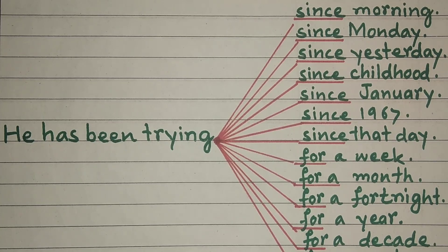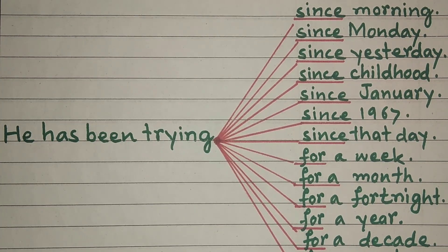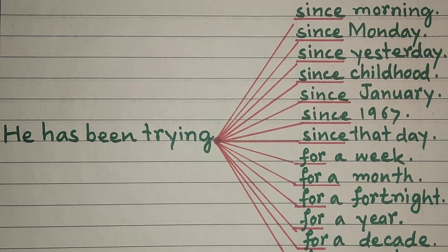Let's understand with examples. Agar aap yeh kehna chahte hain: 'Woh subah se koshish kar raha hai' — since morning. 'Woh peer se koshish kar raha hai' — since Monday. 'Woh kal se koshish kar raha hai' — since yesterday. 'Woh bachpan se koshish kar raha hai' — since childhood. Since January, since 1967, since that day.